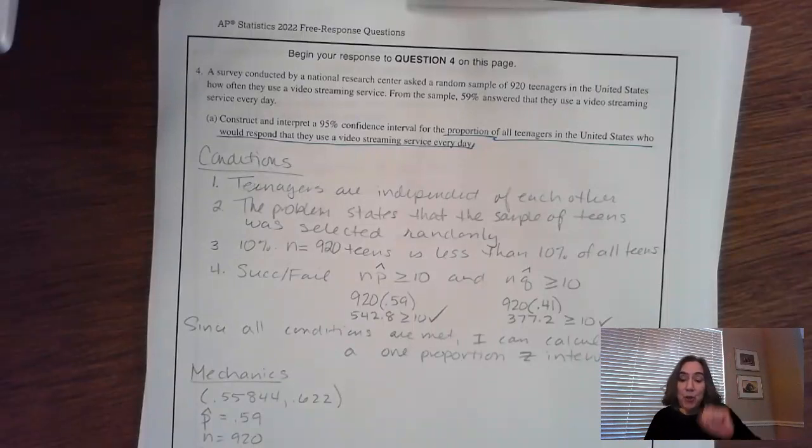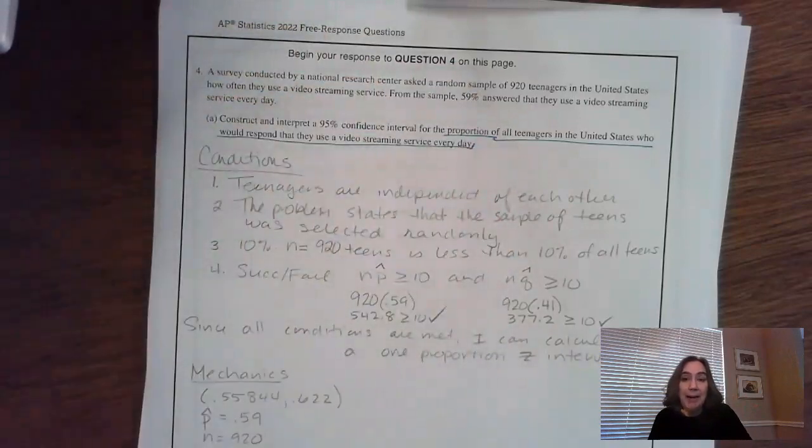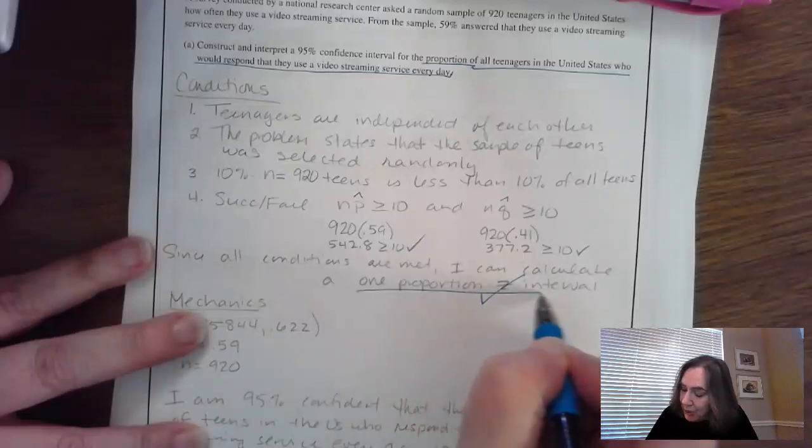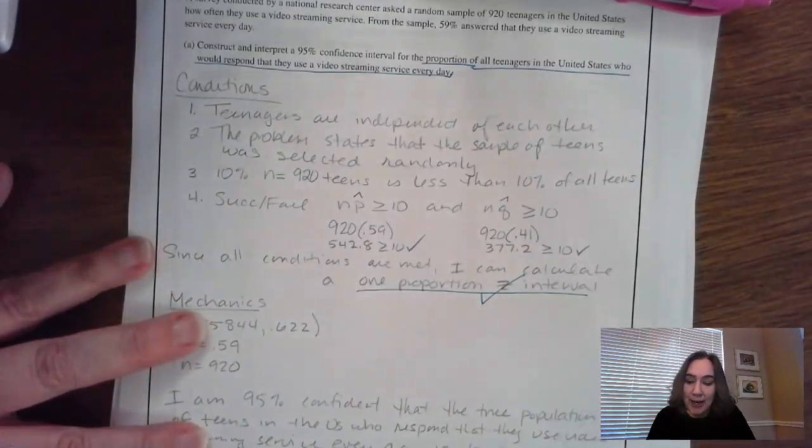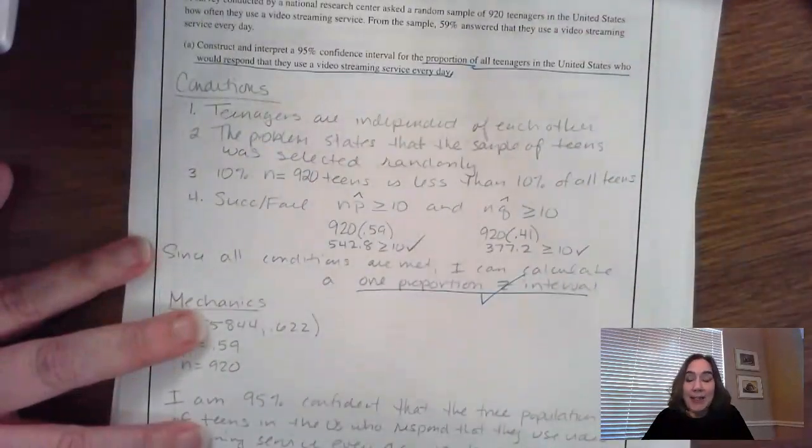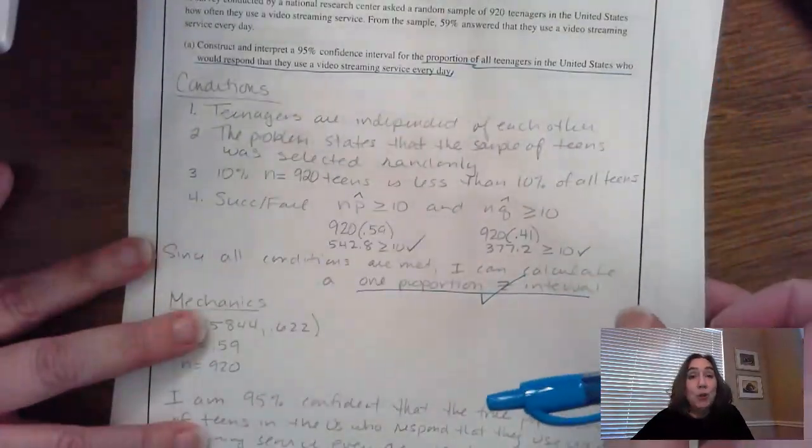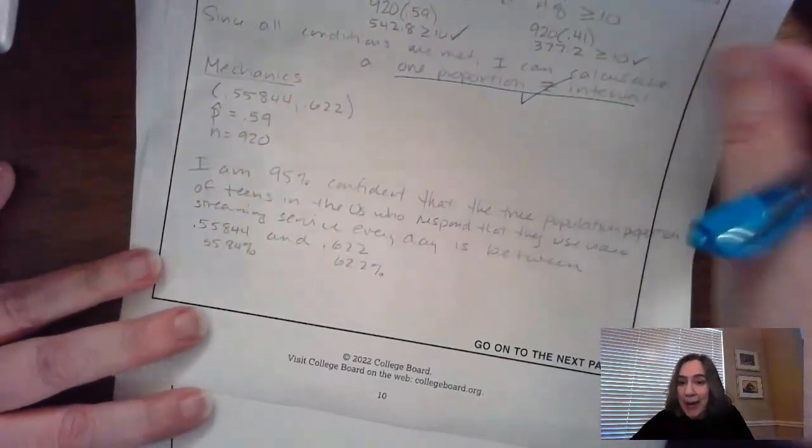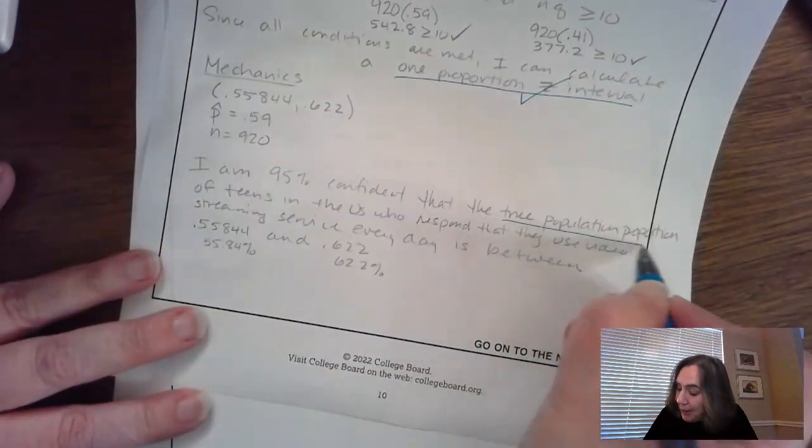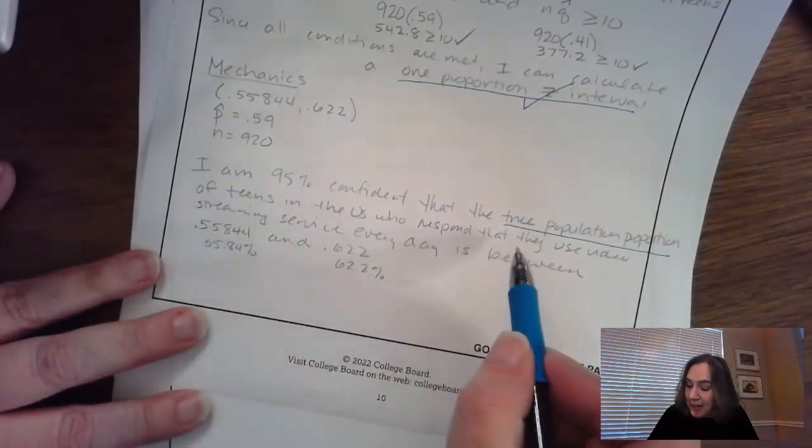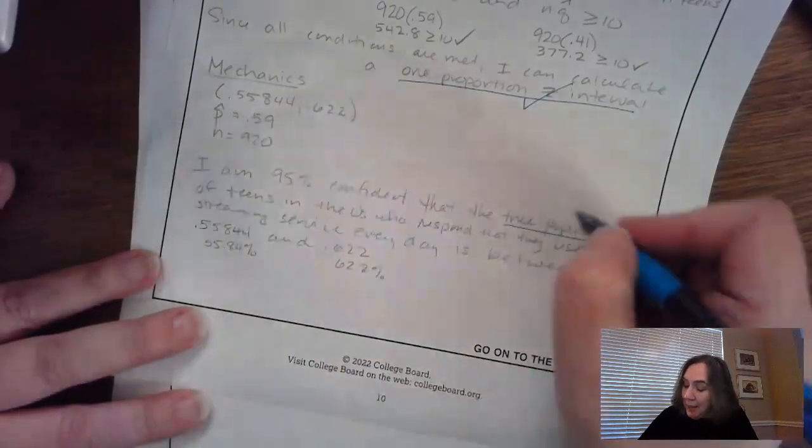The first section only has two check marks. We're looking for anywhere in there in Part A. Did they say that they're going to be using a one proportion Z interval? If you did, go ahead and put a check mark right here. My person said we're using a one proportion Z interval. That is the first check. The other thing you need to look for that the AP was looking for for the first component is that did they also say that they were trying to find the true population proportion? So it doesn't say it up here. So go look anywhere you can. Did you write in your interpretation true population proportion? If they did that and there's context of teens in the US who respond they use video streaming every day, that means that is the second check.